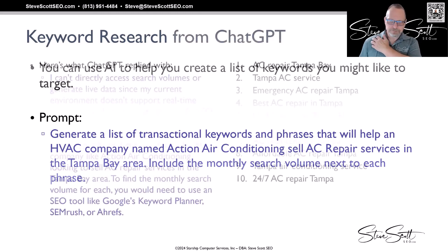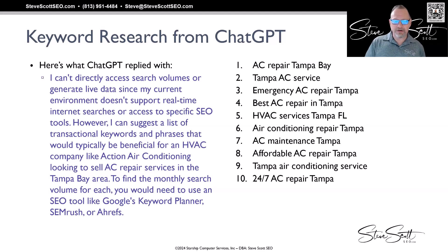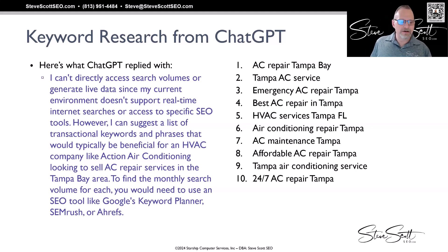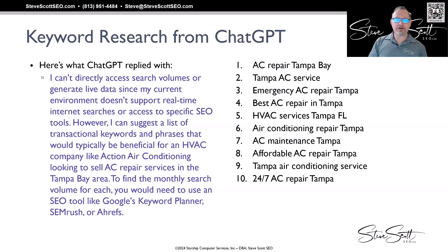When I did that, this is what ChatGPT replied with first. It said — and I love this — 'I can't access search volumes or generate live data since the current environment doesn't support real-time internet searches or access to specific SEO tools. However, I can suggest a list of transactional keywords and phrases that would typically be beneficial for an HVAC company like Action Air looking to sell AC repair in Tampa.' To find the monthly volume, you'll have to use a dedicated tool, and they listed some.